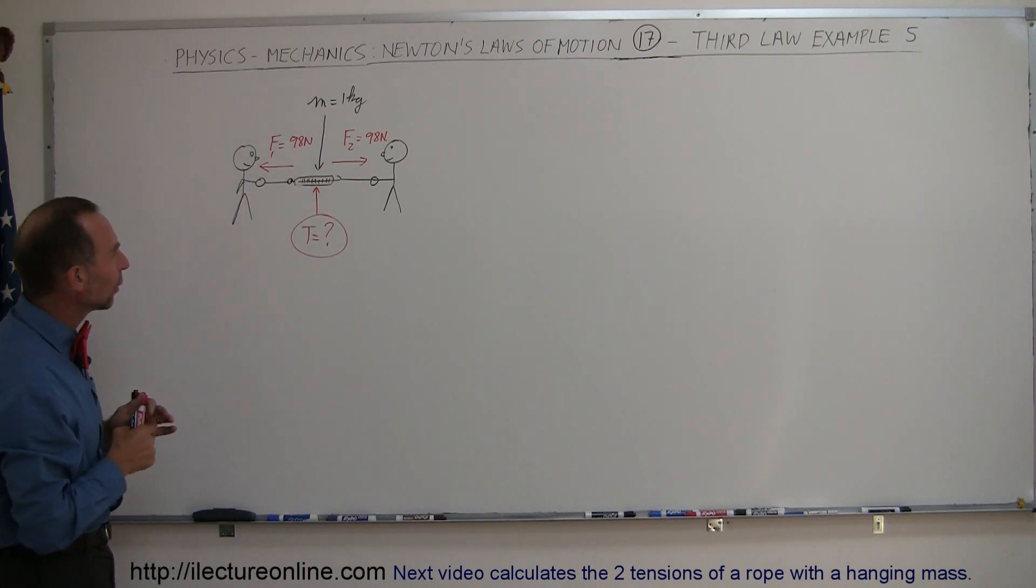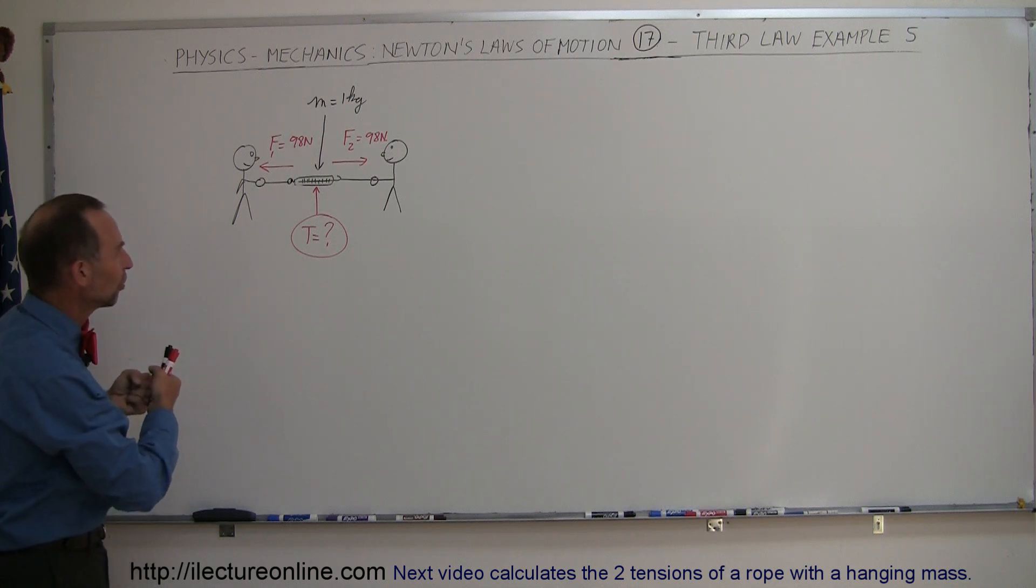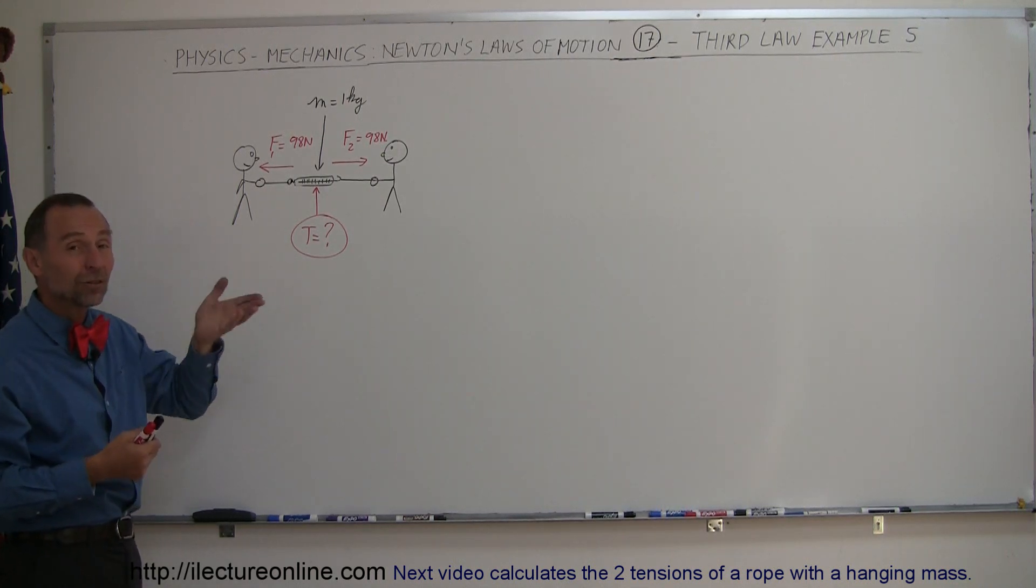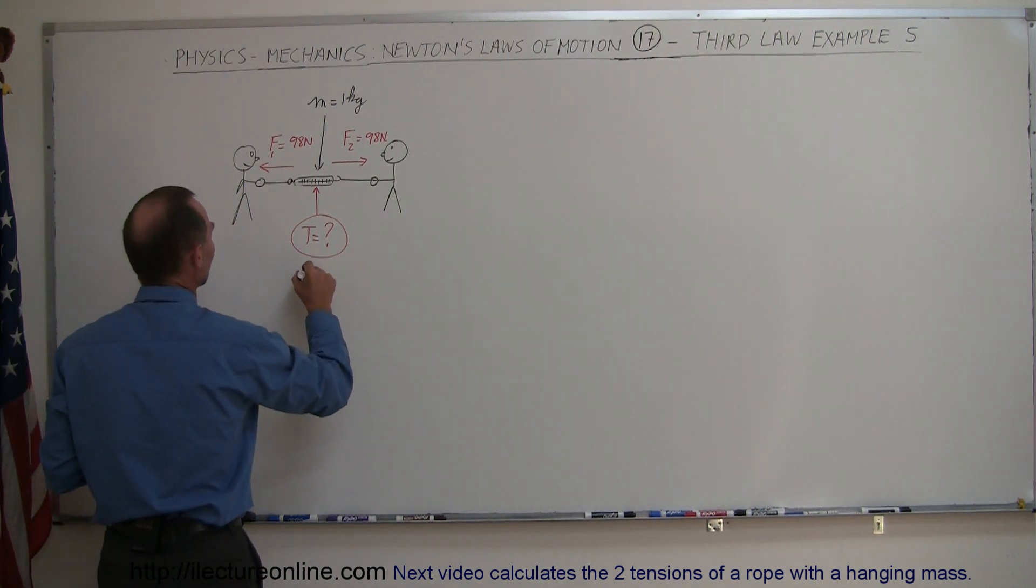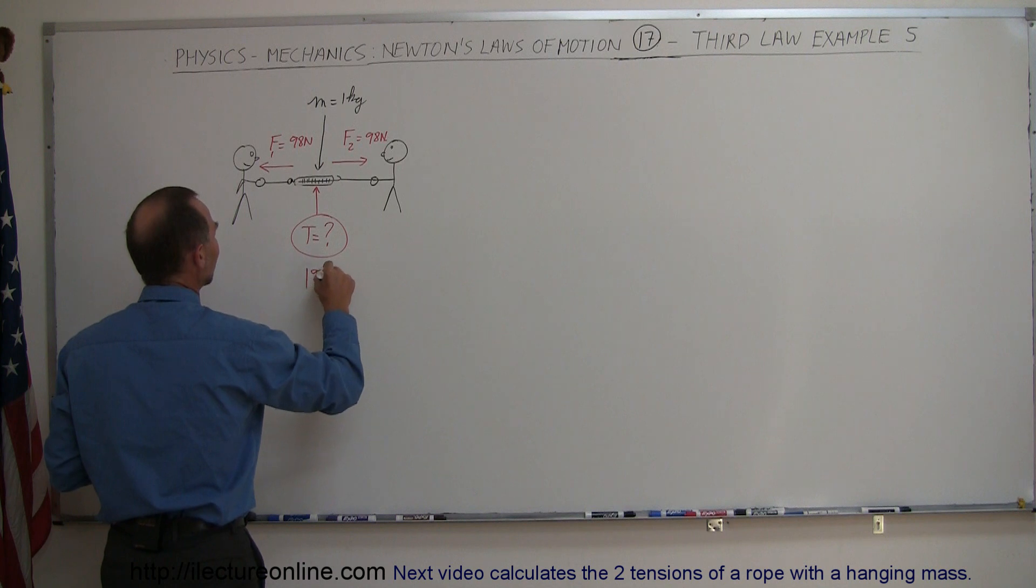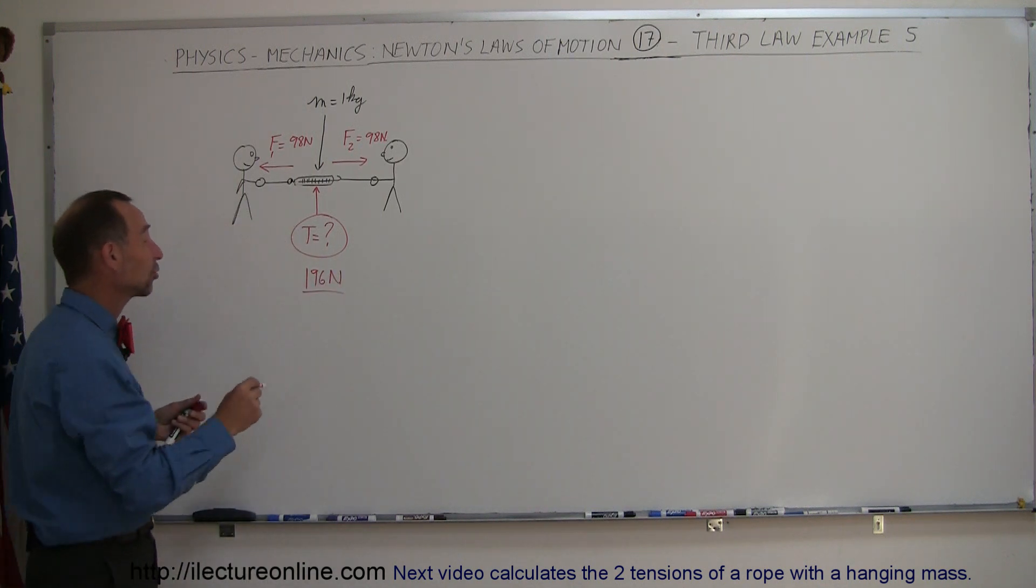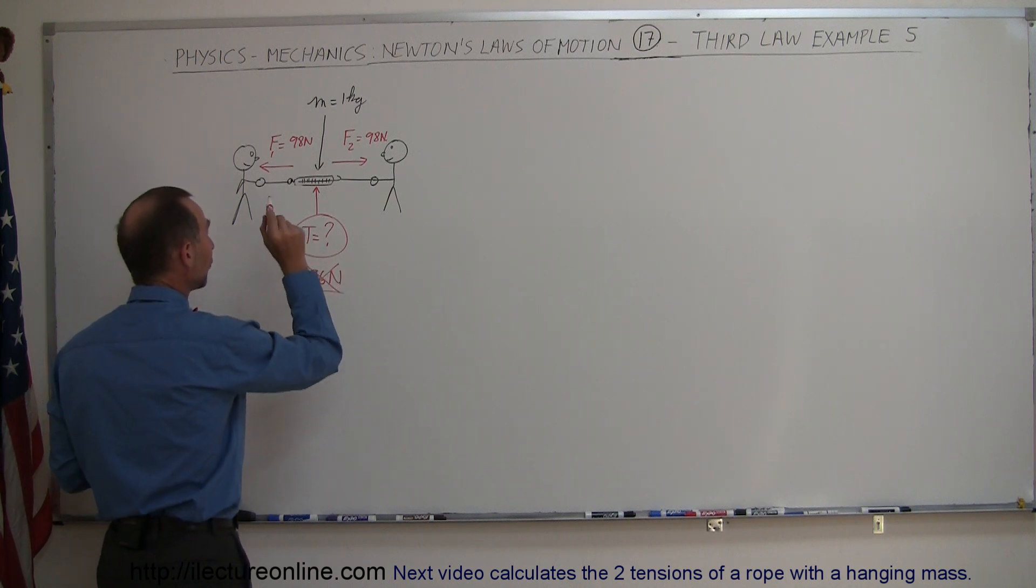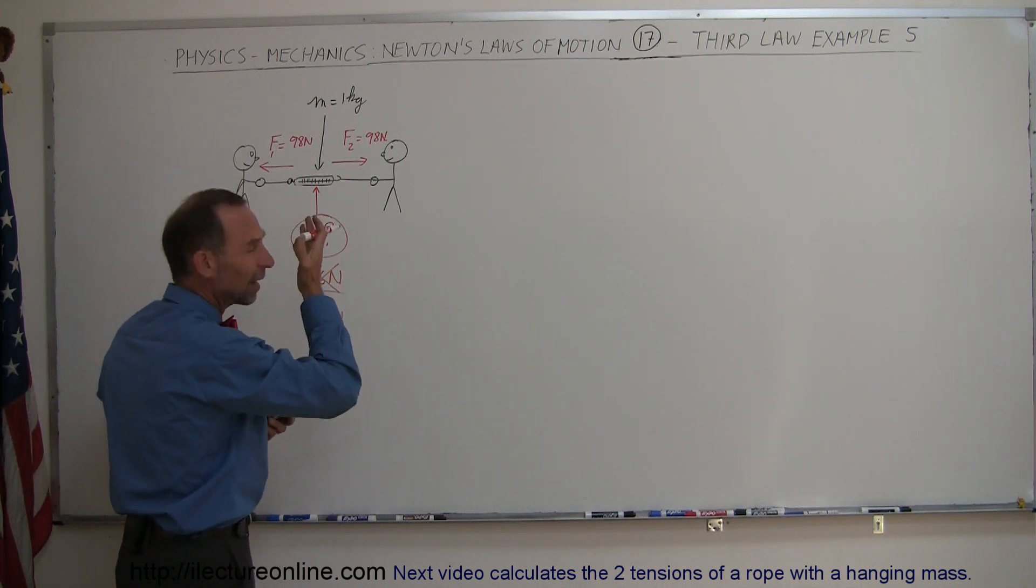And sometimes we look at that and go well if one person is pulling 98 Newtons in one direction, the other person is pulling 98 Newtons in the other direction, shouldn't the reading on the scale then be twice that or 196 Newtons? So sometimes students will say oh no problem, I know this has to be 196 Newtons. But it's not true, in actuality the force you'll read on the scale is simply equal to 98 Newtons. And you say well wait a minute, how can that be?